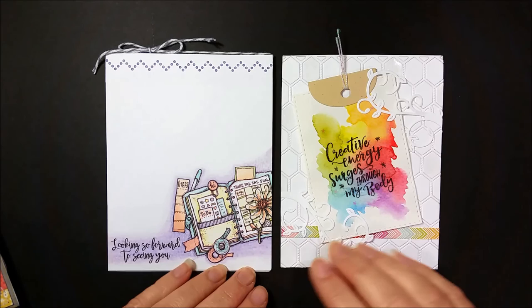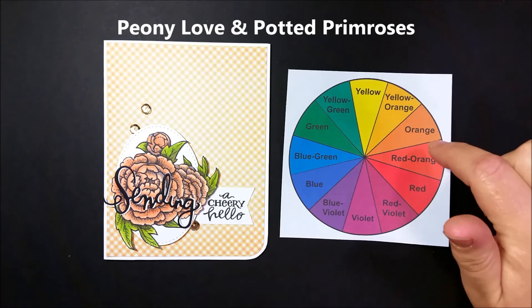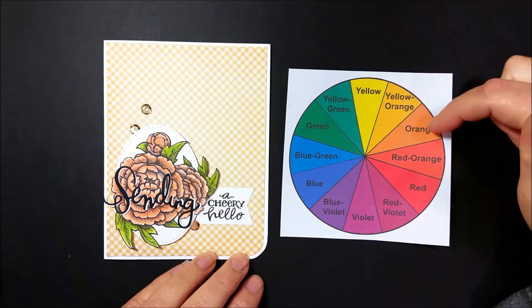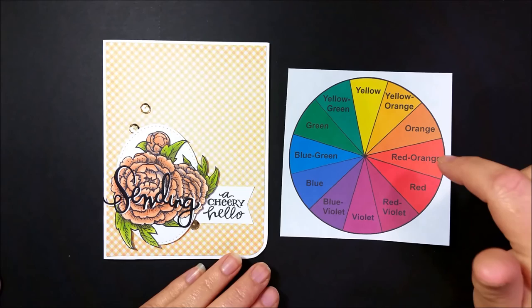We talked about an analogous color scheme, which is three or more colors that are sitting next to one another on the color wheel. This card here uses pretty much that color scheme. We have a yellow in the plaid, we have the orangey, orangey-reds with the bloom, and the yellow-greens in the leaves. And it works because they all sit side by side on that color wheel.